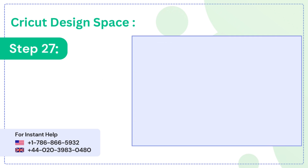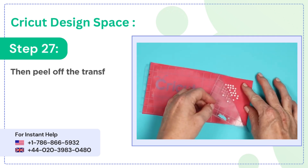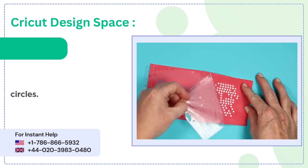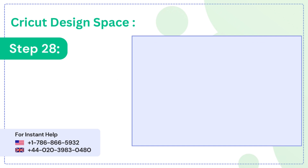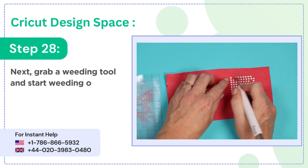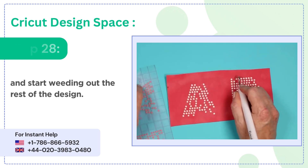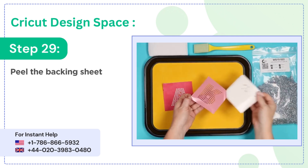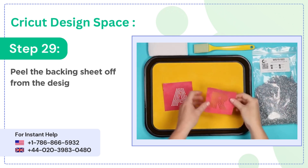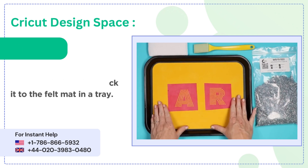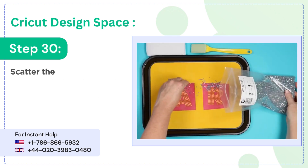Step 26: place a piece of strong grip transfer tape over the flock material and burnish it down well. Step 27: then peel off the transfer tape to weed out the small circles. Step 28: next grab a weeding tool and start weeding out the rest of the design. Step 29: peel the backing sheet off from the design, then stick it to the felt mat in a tray.